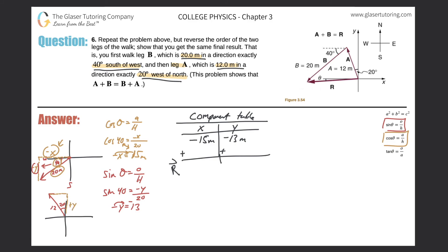Starting with x: I know the hypotenuse is 12, I know the angle is 20, and I'm looking for the side opposite that angle, so I use sine. Sine of theta equals opposite over hypotenuse, so sine of 20 equals negative x over 12. Cross-multiplying gives sine of 20 times 12, which works out to be 4.1. Remember to carry the negative sign over, so x equals negative 4.1.